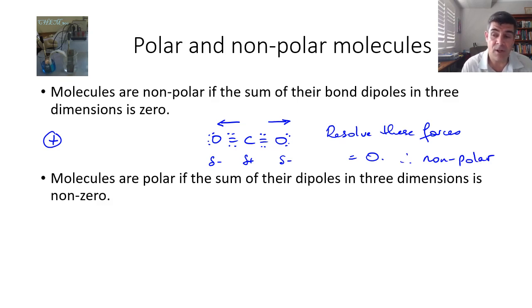Now if the sum of the dipoles in three dimensions is non-zero, then we have a polar molecule, and our example for that was water. In this case we have a slight positive region here, a slight positive region here, a slight negative region here, and of course a couple of unpaired electrons as well as the paired electrons that are part of these bonds.